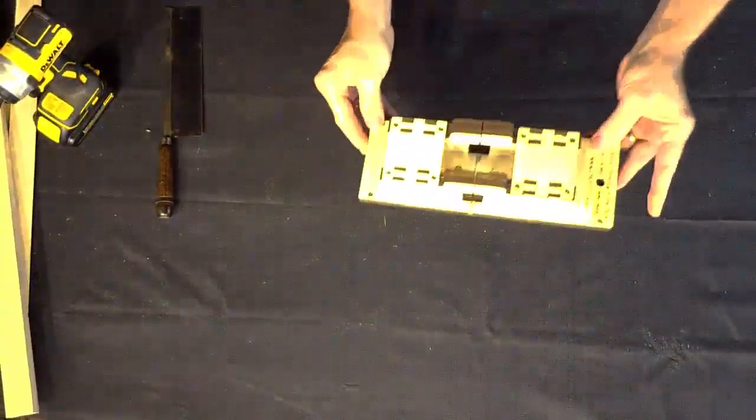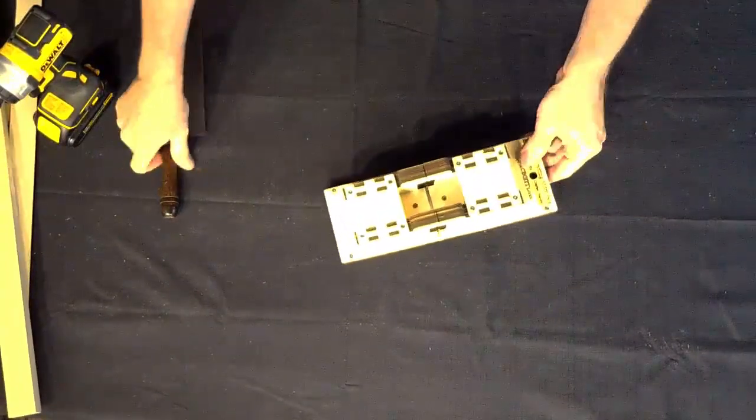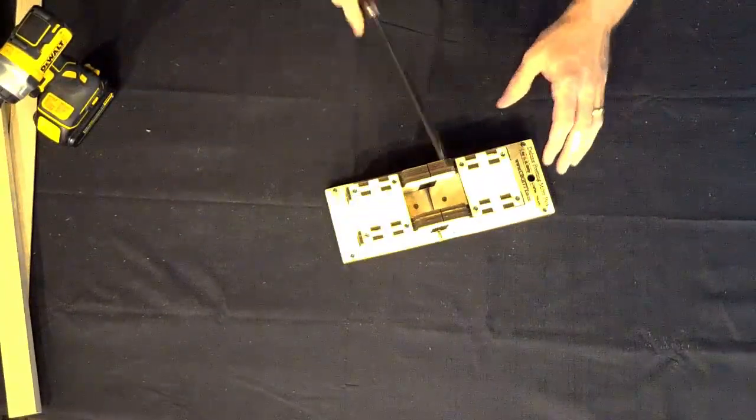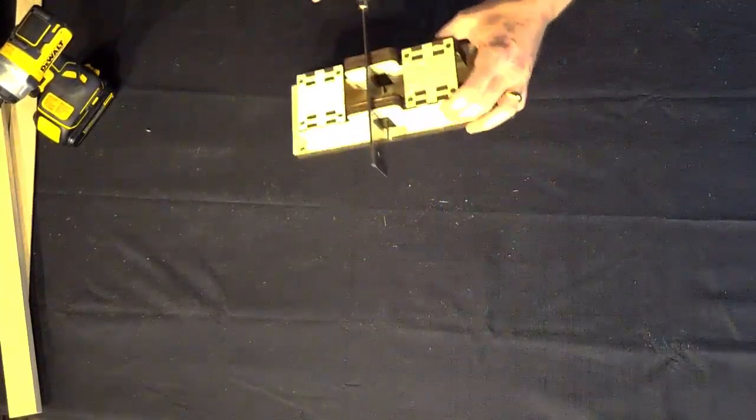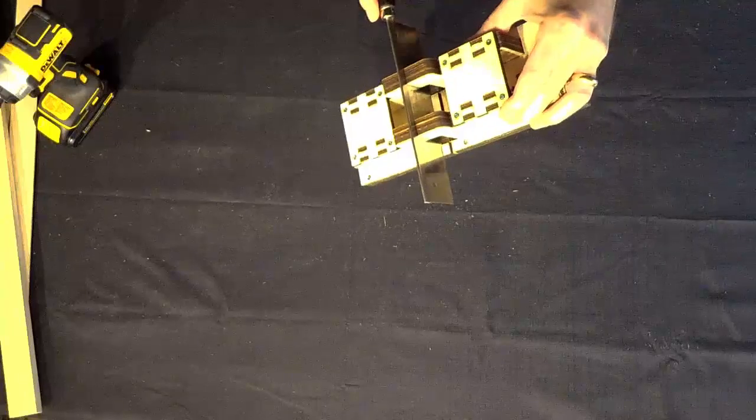Your deluxe miter box is now complete. Take your fretting saw and run it down through the slot. For this first time, you may need to saw back and forth a little bit to remove any roughness.